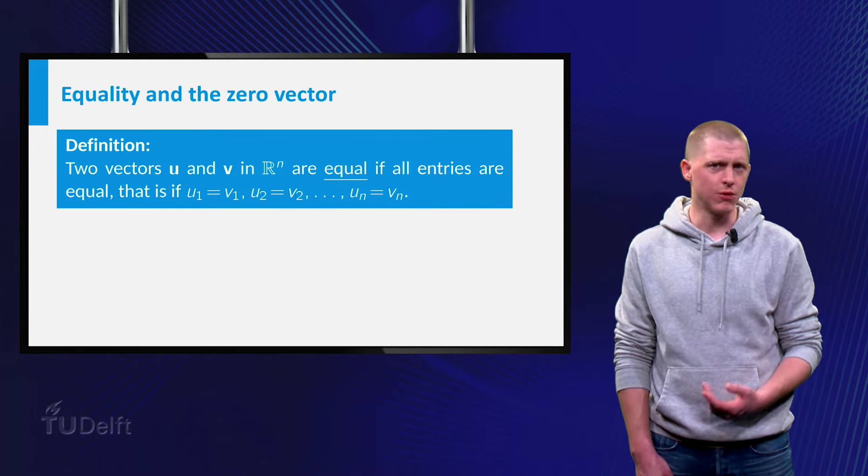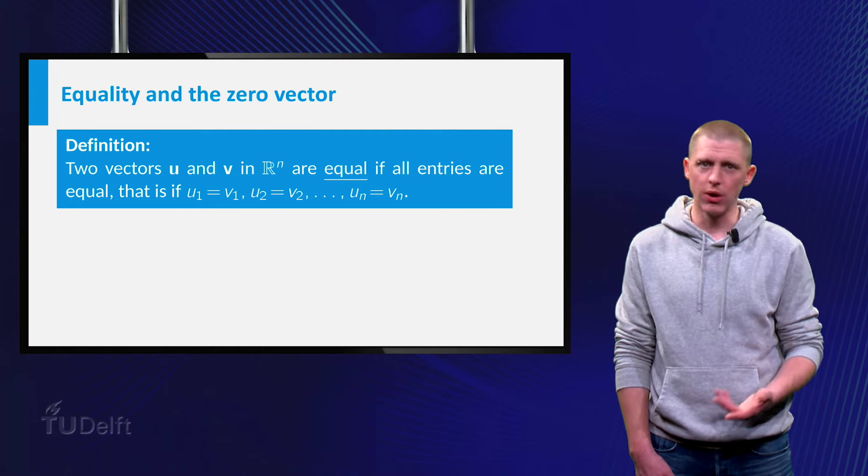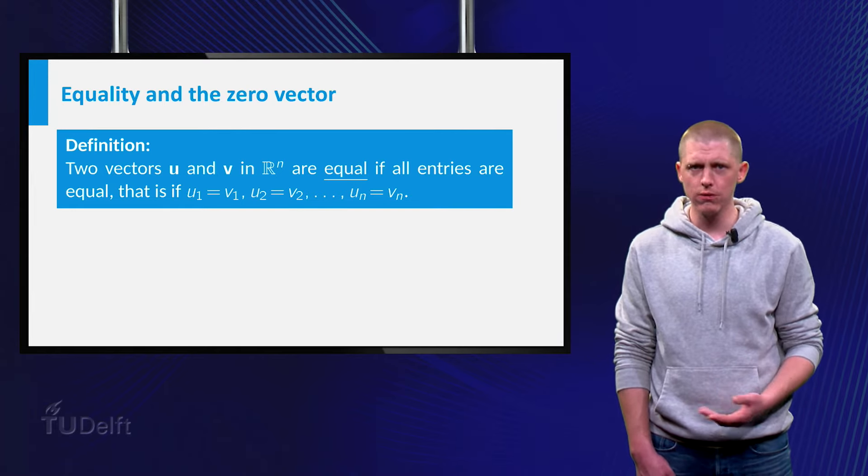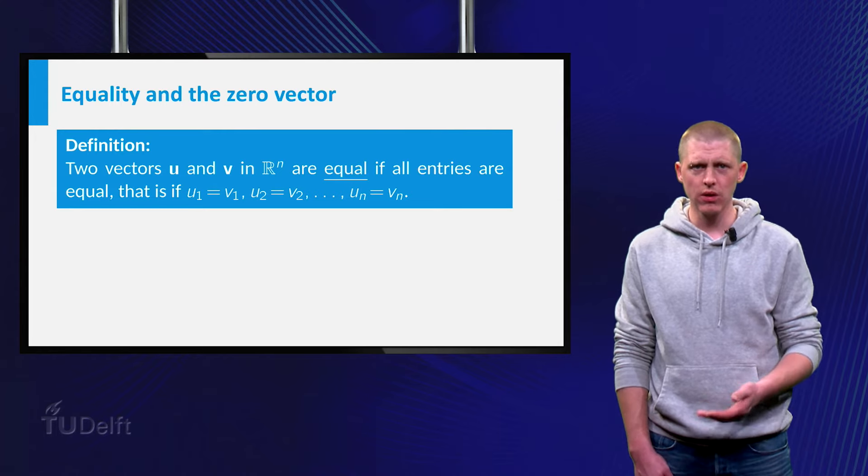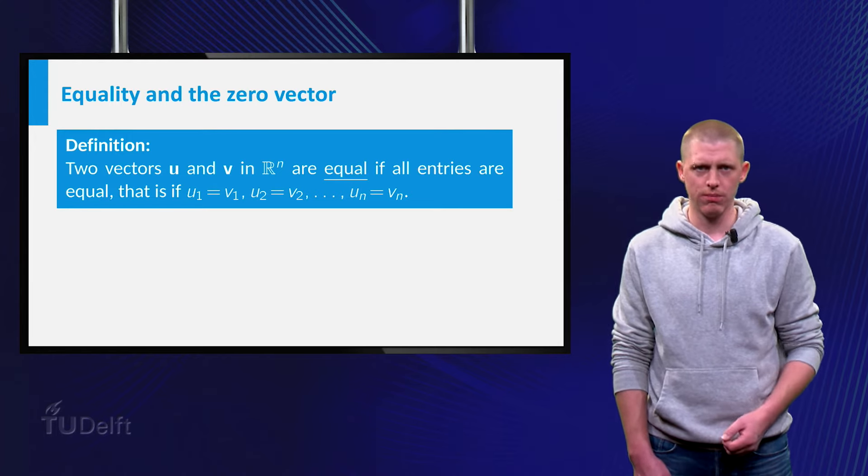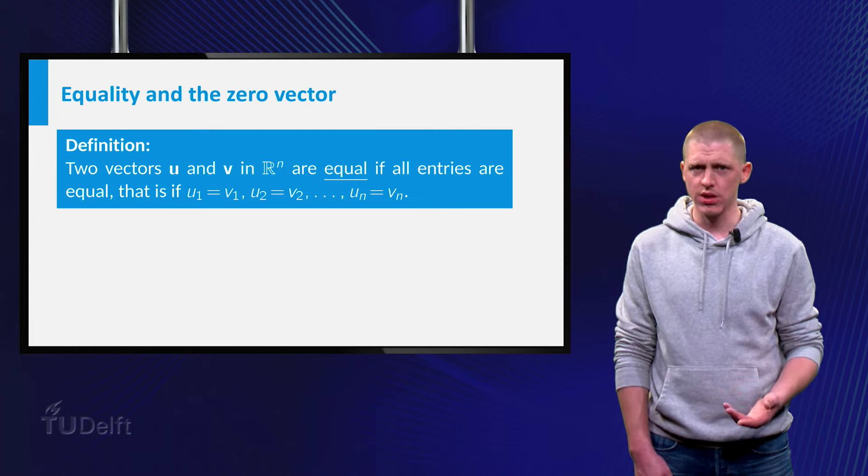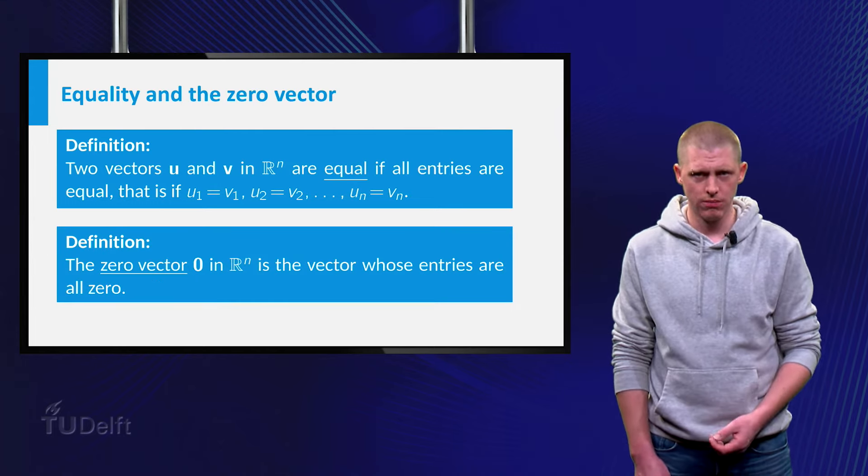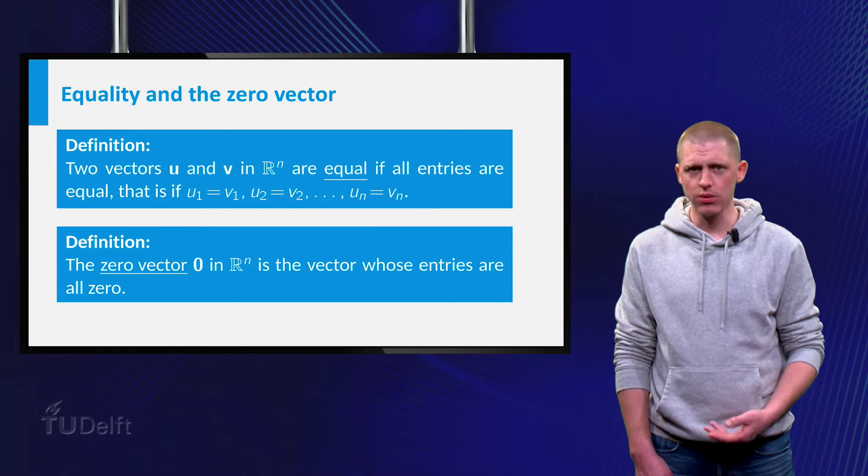Now assume you have two vectors, u and v, both in Rn. Just as for two or three entries, u and v are equal if and only if all entries are equal. There also exists a special vector in Rn, whose entries are all zero. This vector is called the zero vector.